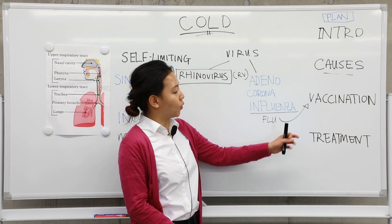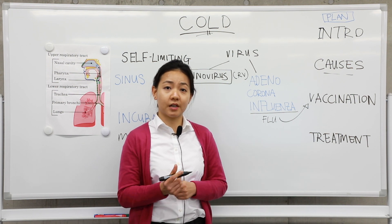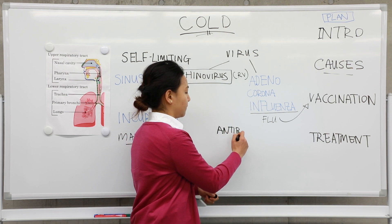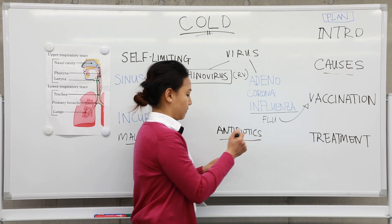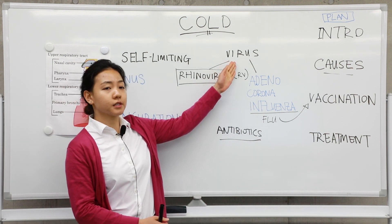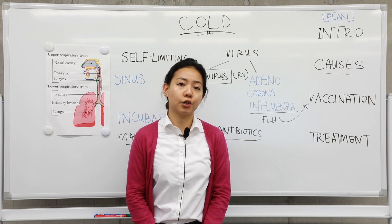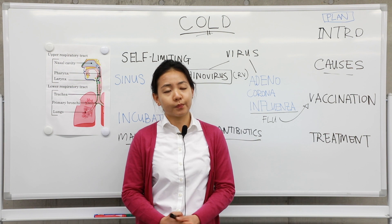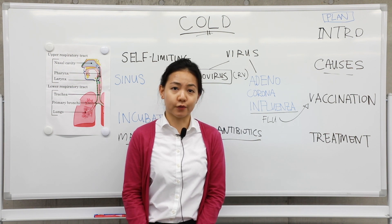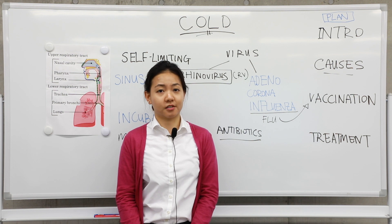So how is the common cold normally treated? Unlike bacterial infections where you may be given antibiotics, for viral illnesses — illnesses caused by a virus — we do not usually have specific medication to treat them. Normally we just treat the symptoms. For example, if you have a running nose, we will give you medicine for a running nose. If you have a fever, you may take fever medication. And if you have a blocked nose, you may take decongestants.